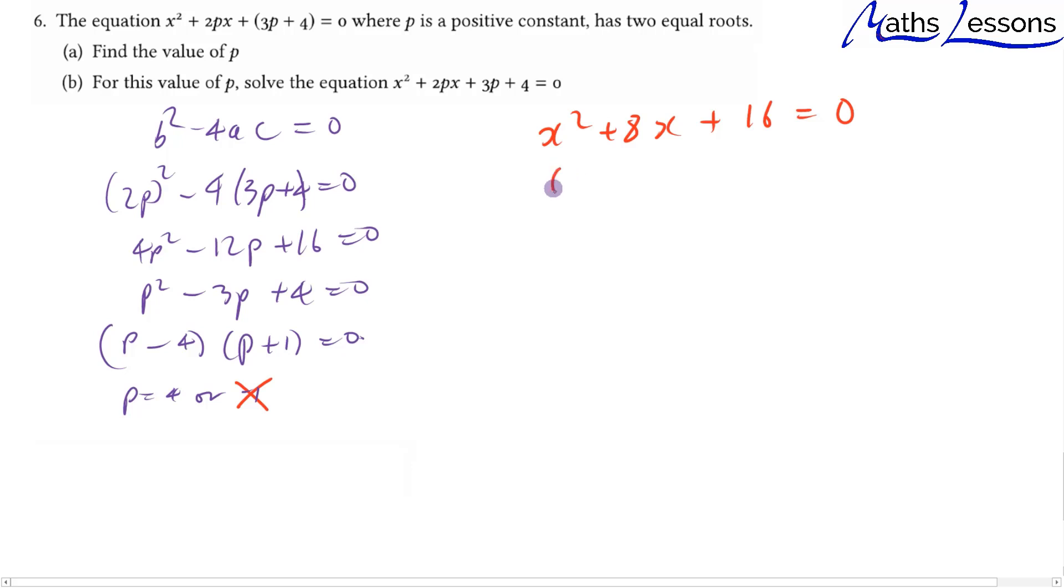You should see that we can just factorize that as (x + 4)² = 0, so therefore x must equal -4. Two equal roots, and they're both equal to -4.